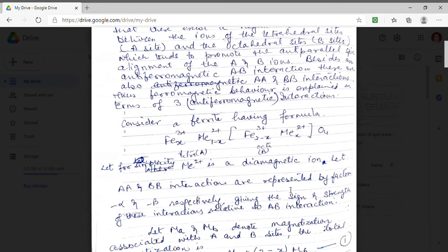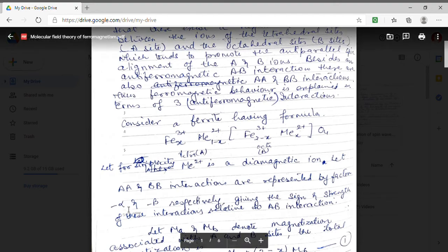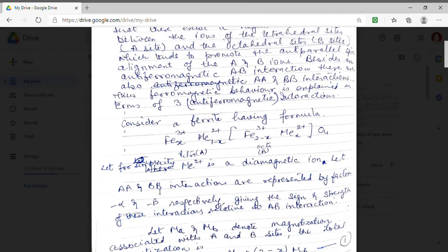I am assuming for simplicity that divalent metallic iron is diamagnetic in nature. Now as we have stated that there are three interactions. Let the interaction A-A be denoted by a factor minus alpha and the B-B interaction be denoted by a factor minus beta. The negative sign denotes the interaction relative to the A-B interaction.